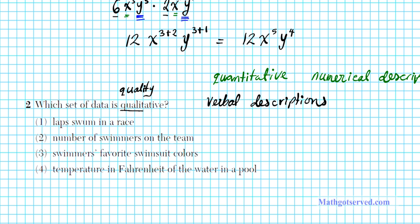Verbal means described using words, numerical means described using numbers. What I'm going to do is make up an answer for all four data sets, then we'll see which one is a verbal description. Laps swam in the race: four laps. Number of swimmers on the team: five swimmers.